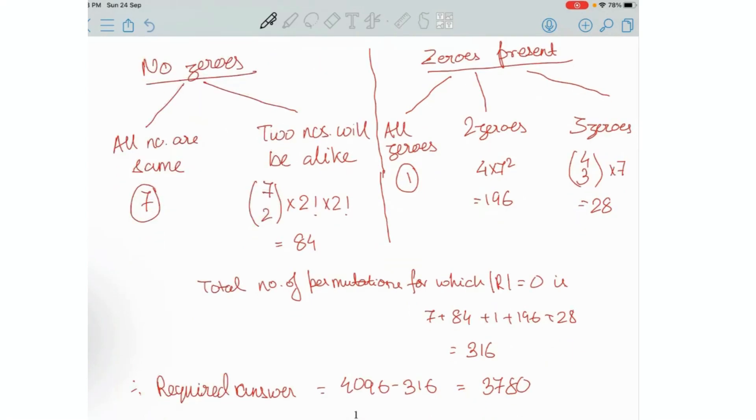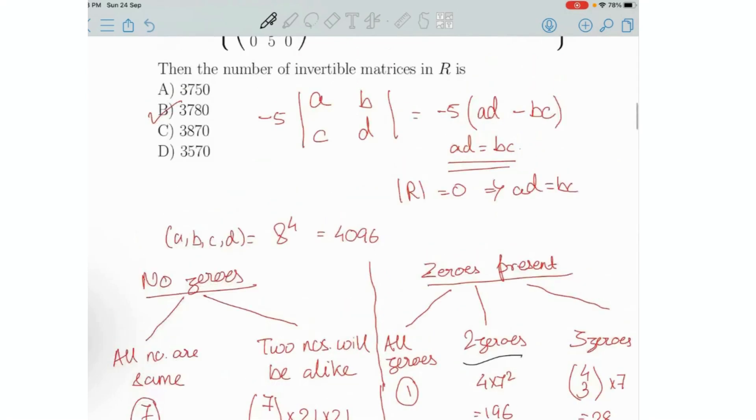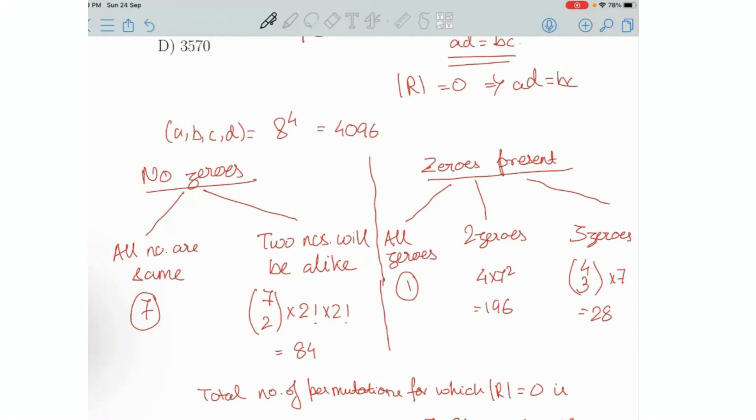In the two zeros case, why have you taken 7 square and not 7c2 here? The reason is when I'm taking two numbers, we are selecting two numbers here. The numbers cannot be equal to each other because if they are equal to each other all four numbers will become equal, and that case is already considered here in this part. I have already considered here where all the numbers are equal. So among non-zero numbers, either all the numbers have to be equal or two numbers have to be equal - we'll have two pairs of equal numbers.